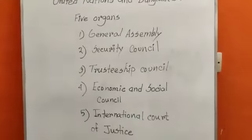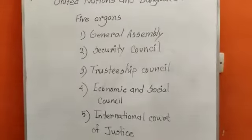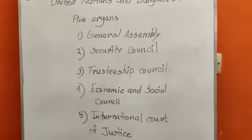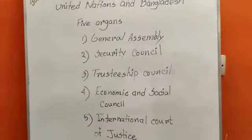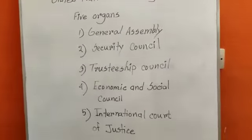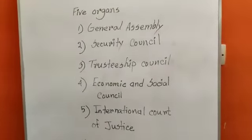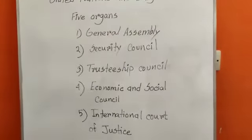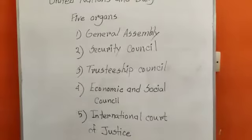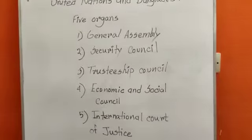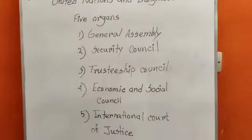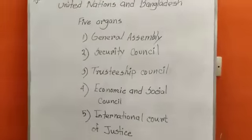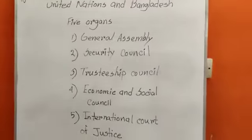The Security Council is another very important council and is responsible for peacekeeping and defense. There are five main permanent members: UK, USA, Russia, China, and France. There are also 10 temporary members of the Security Council. The Security Council has veto power — the five main members can deny any proposal that would be developed by the General Assembly.